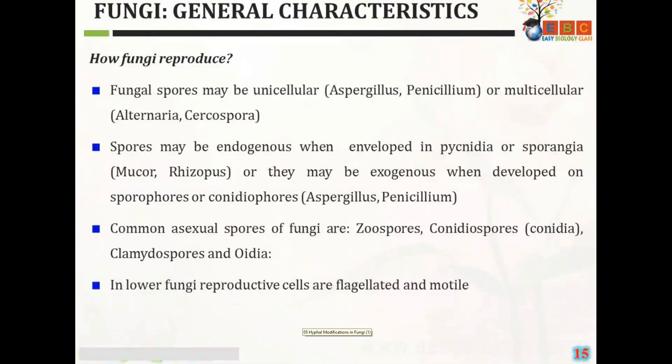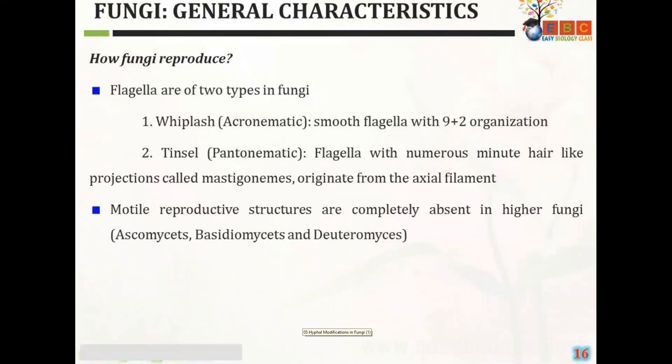In lower fungi, reproductive cells are flagellated and motile. Flagella are of two types in fungi: whiplash and tinsel. Smooth flagella with 9+2 organization is called whiplash. Flagella with numerous minute hair-like projections, called mastigonemes, originated from axial filaments, is called tinsel.